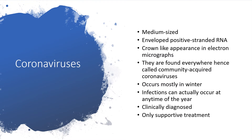Coronaviruses are medium-sized — not big, not small. They are envelope-positive, single-stranded ribonucleic acid. They are crown-like in appearance under electron micrographs. They are found everywhere, which is why they are called community-acquired coronaviruses. Infection occurs mostly in wintertime, but can actually occur at any time of the year. It is clinically diagnosed, though you can run laboratory investigations to be more certain. The treatment that can be administered is only supportive.